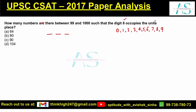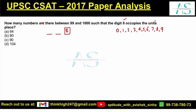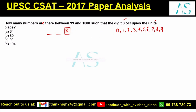The digit 8 always occupies the units place. If you haven't seen the basic concept of permutation, check lecture number four of the CSAT 2024 course playlist. Eight is always placed at the units position, so you take out eight and place it there. This can be done in exactly one way.